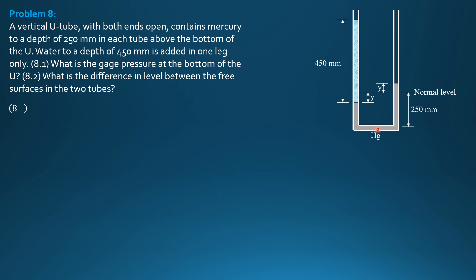And take notice, this is mercury. So beginning with this point, 0, plus gamma of water times 450 mm, so we'll just use 450 mm to be consistent. Then jump across, no change in the equation, same pressure,